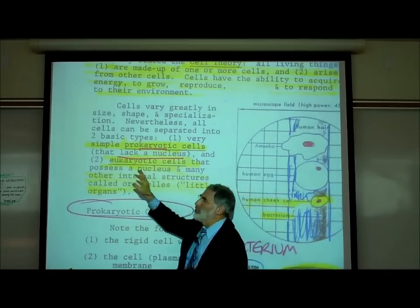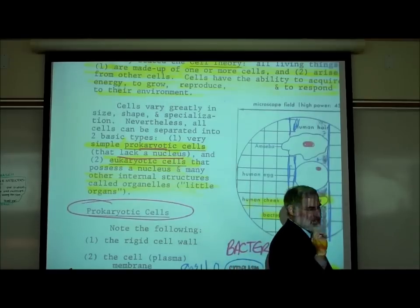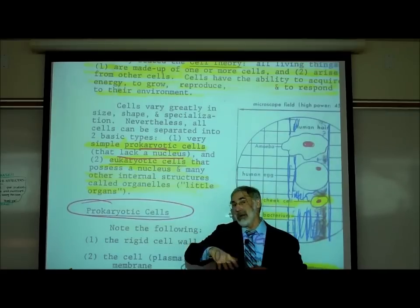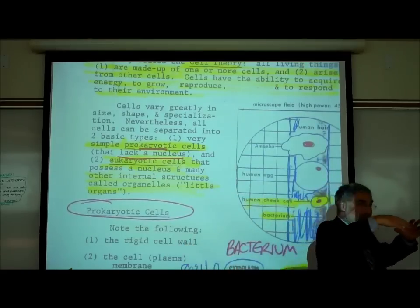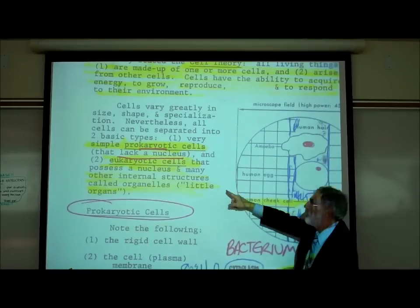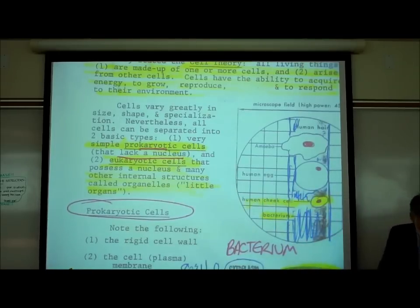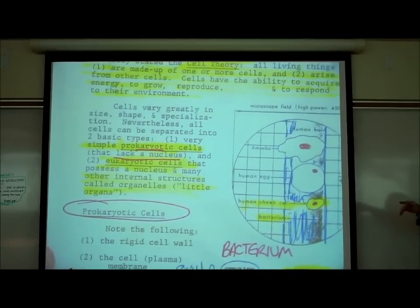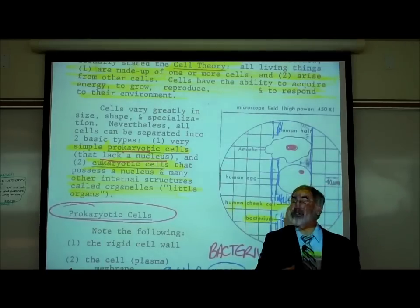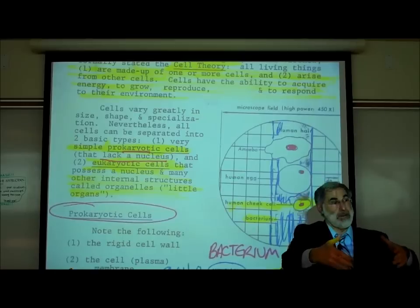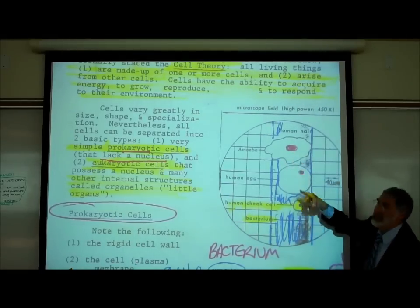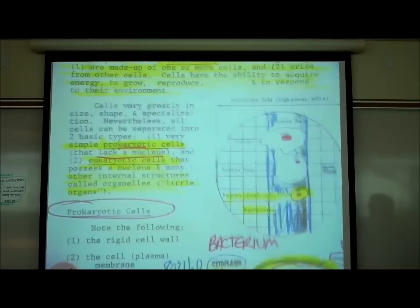The other broad category are eukaryotic cells. The prefix 'eu' means true — they have a true nucleus. They are usually much larger cells with a structure in the center called a nucleus and many other internal structures called organelles, or little organs. The nucleus is called that because the word nucleus means 'in the center.'